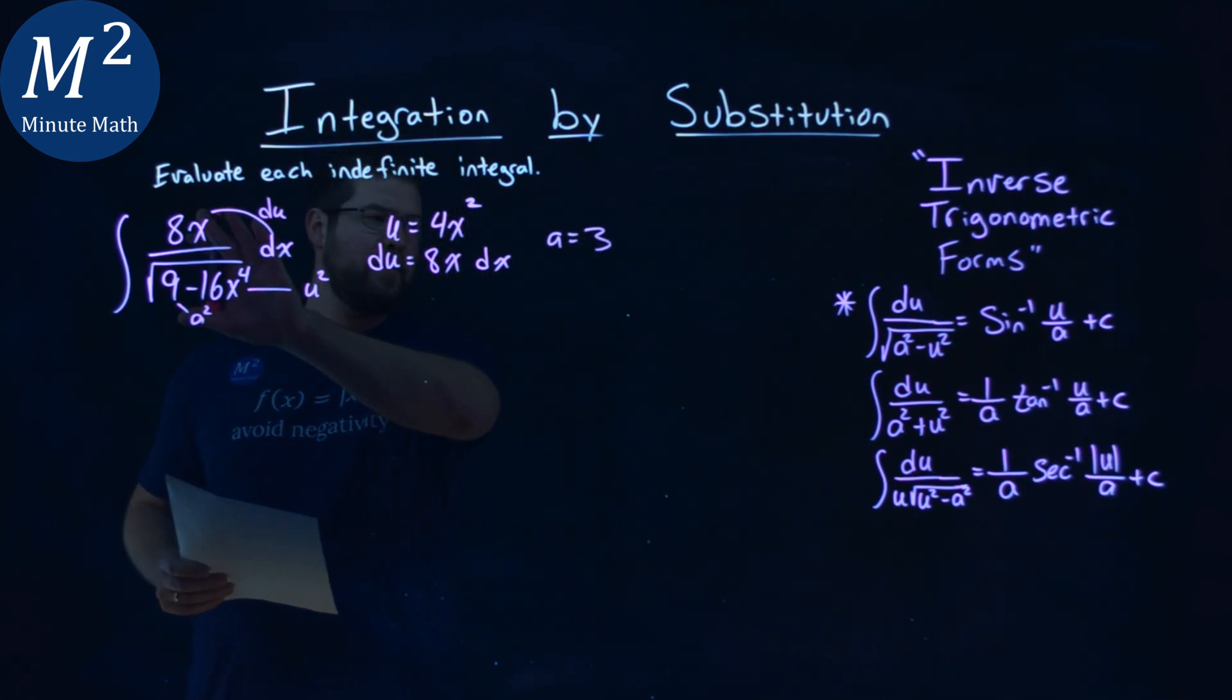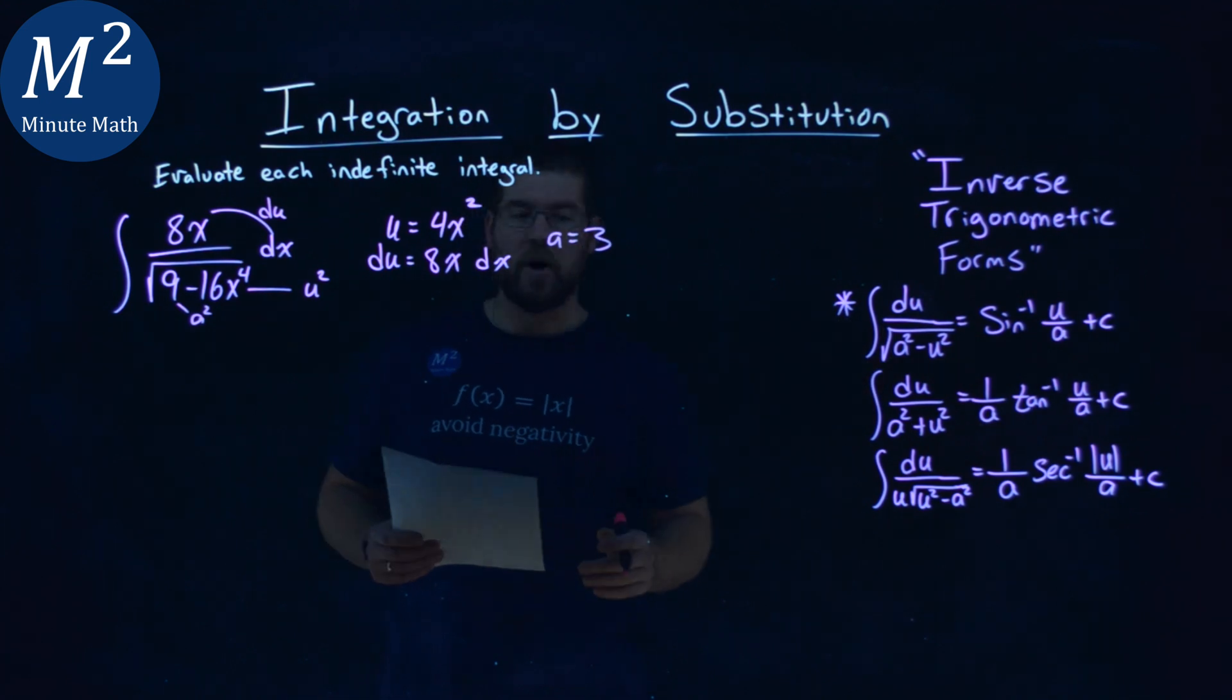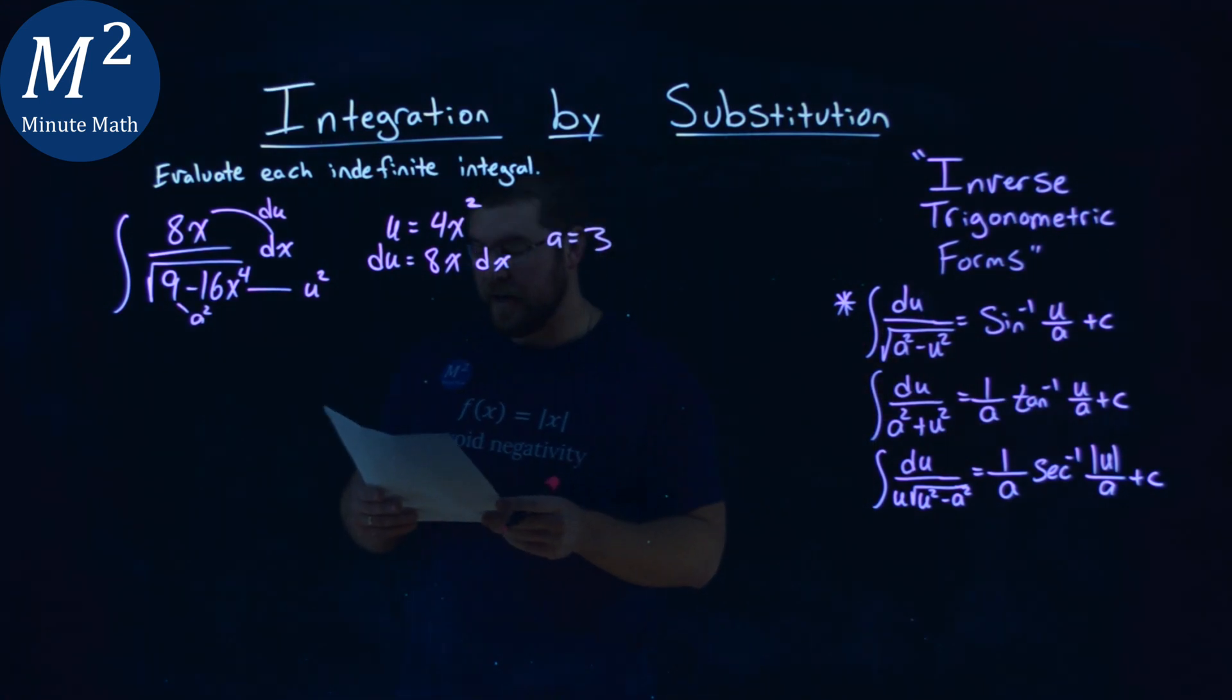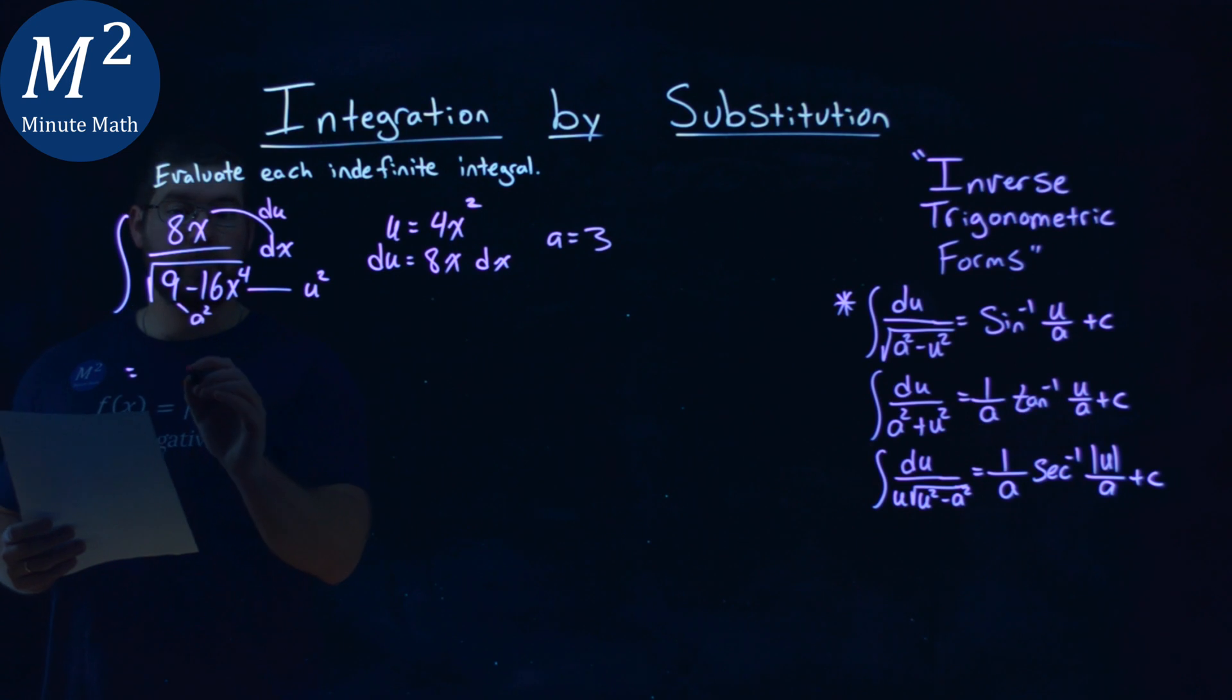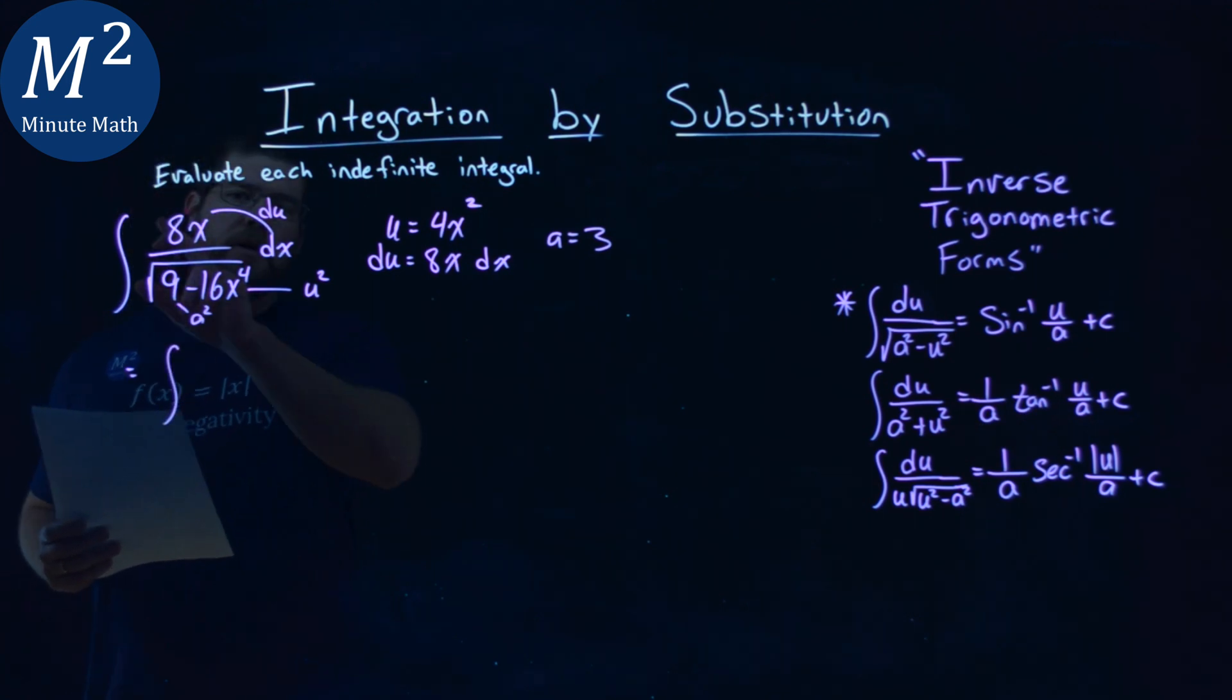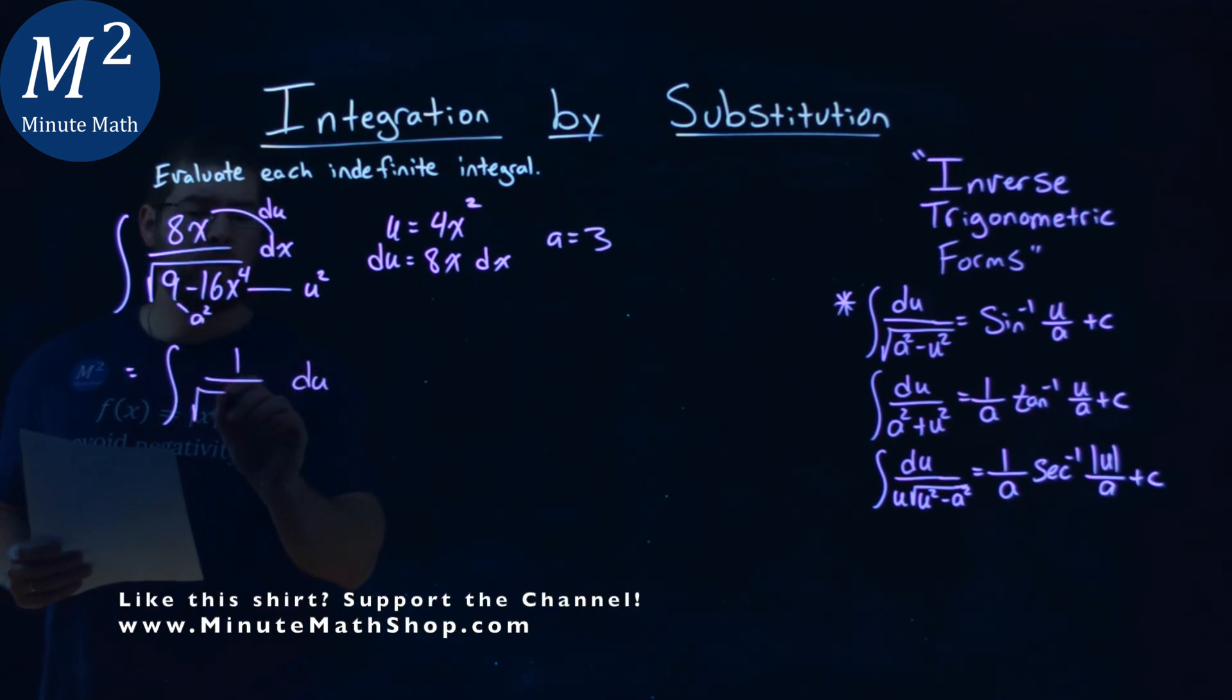And so now we have it set up perfectly in our form for the arc sine. Let's rewrite this in terms of u and du. We have 8x dx is my du, so I have 1 over, put a du over here. And then we have the square root.